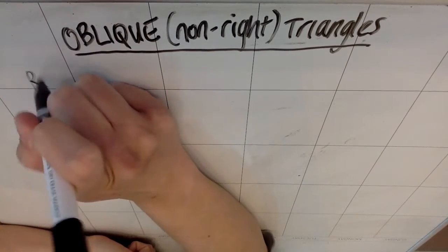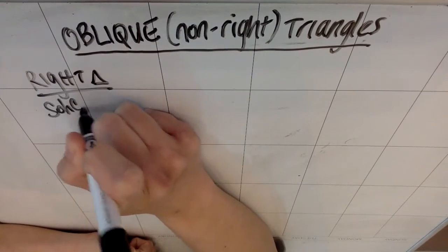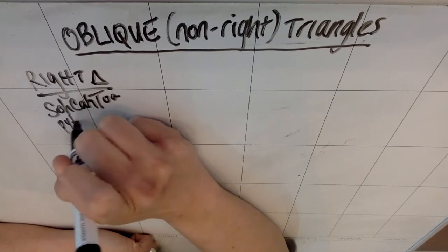So again, if we have a right triangle, we can use SOCA-TOA, and we can use Pythagorean theorem. And those are great.